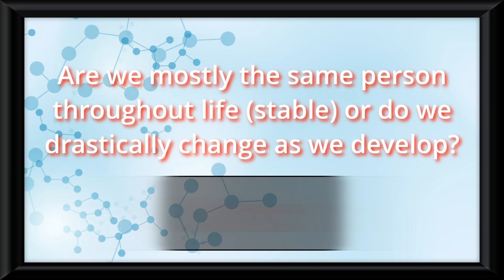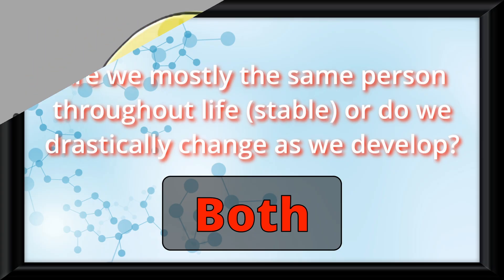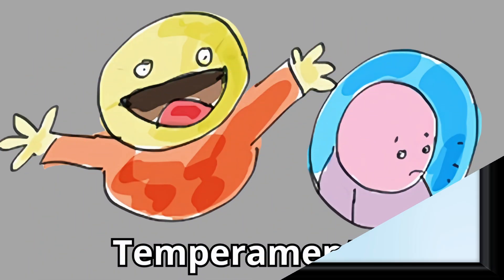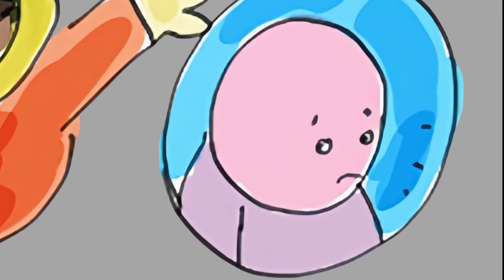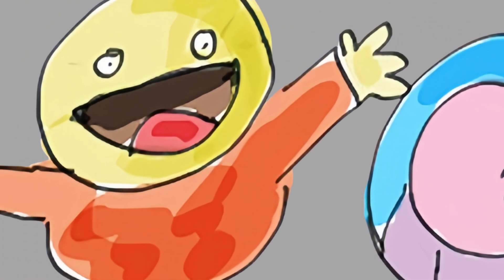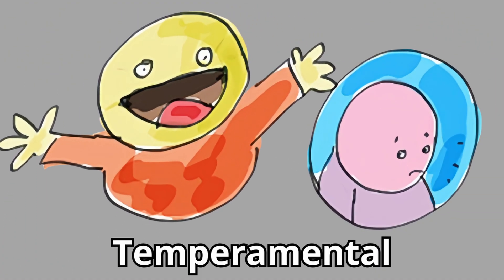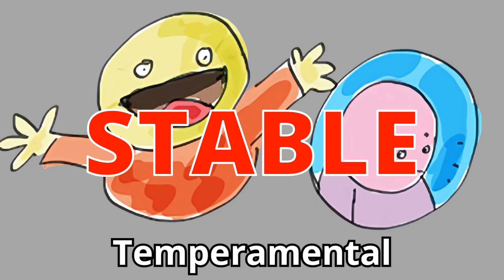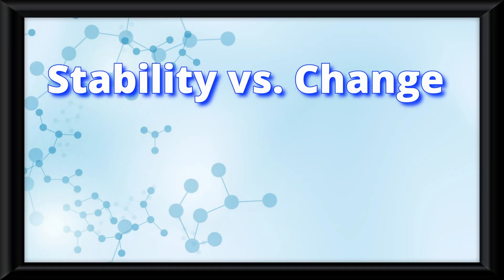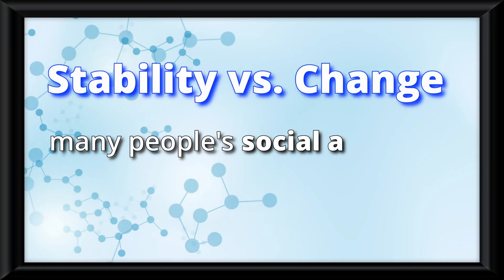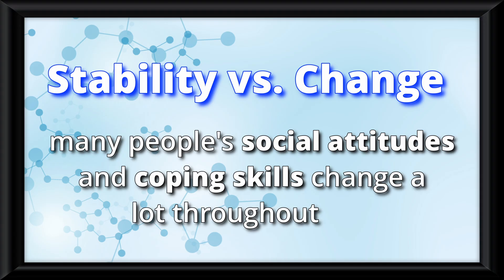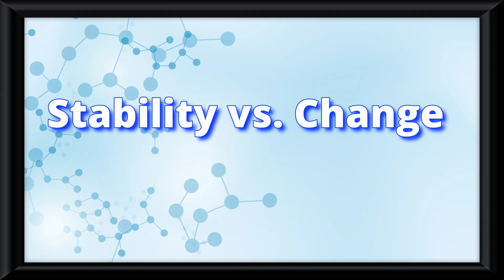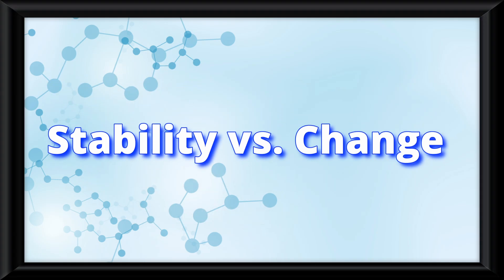The answer is both. If you have a very temperamental personality — like say, always being shy or always being outgoing — then you will be mostly stable throughout life. That being said, many people's social attitudes and coping skills change a lot throughout life. So take that answer however you'd like.